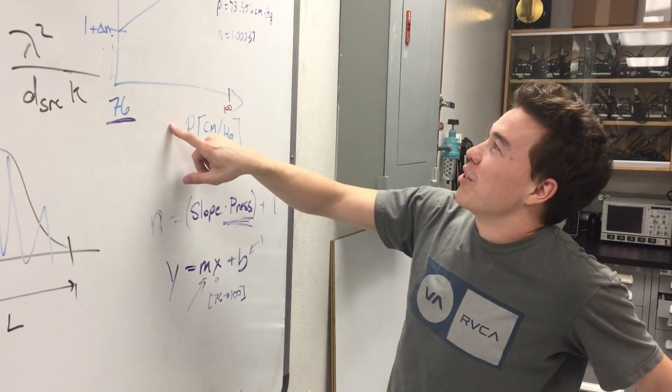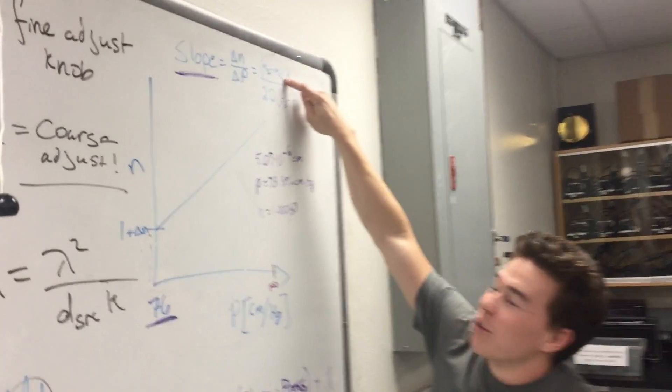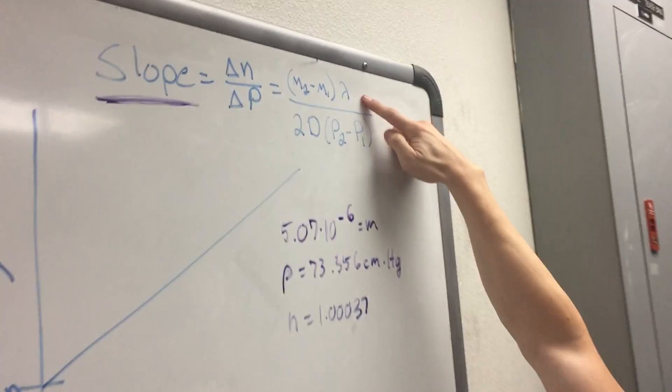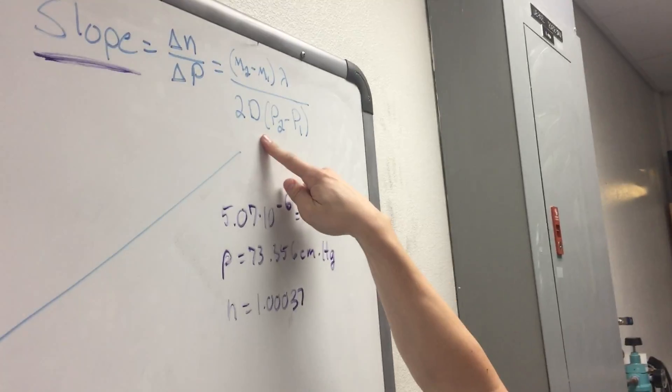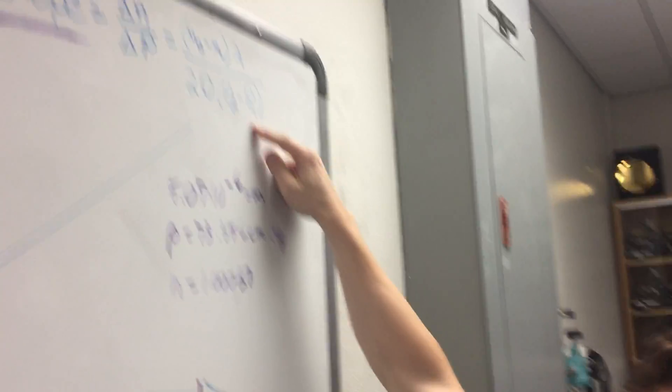To calculate our slope of index versus pressure, we used the number of fringes we counted, which is 20, the wavelength of our HeNe lasers, two times our cell spacing, times the change in pressure that we used, which was 36 centimeters of mercury.